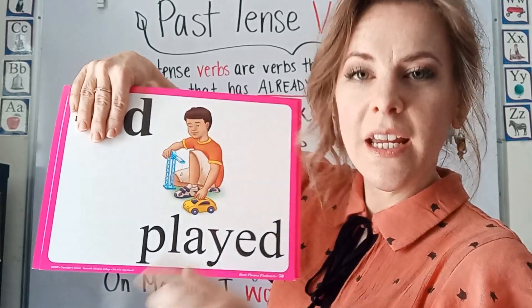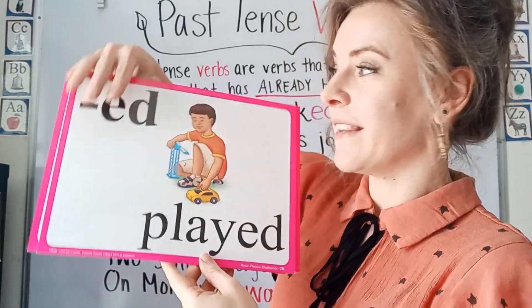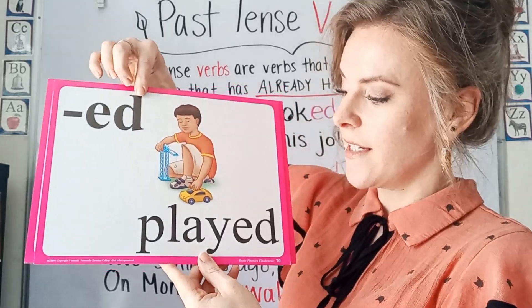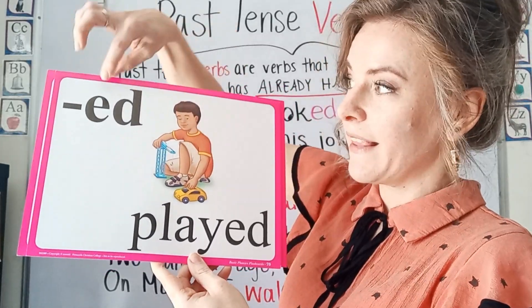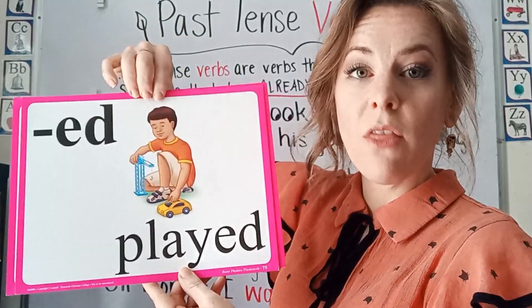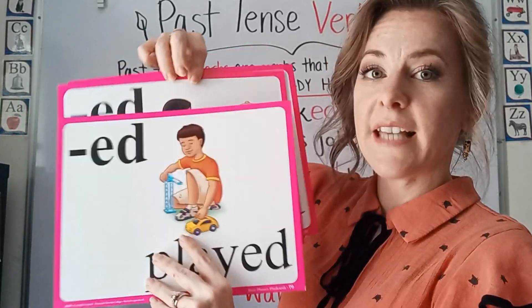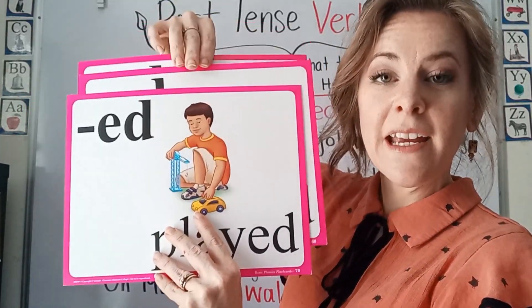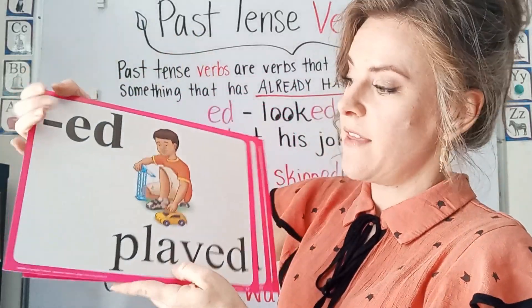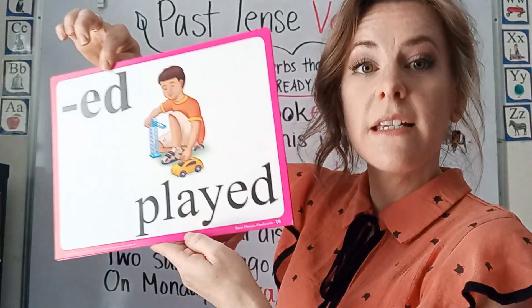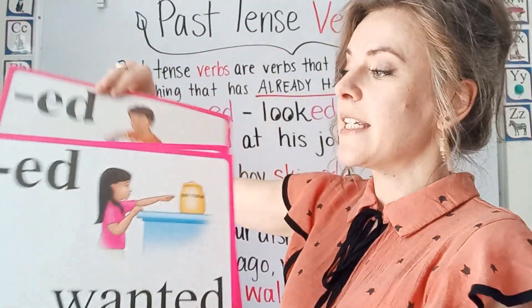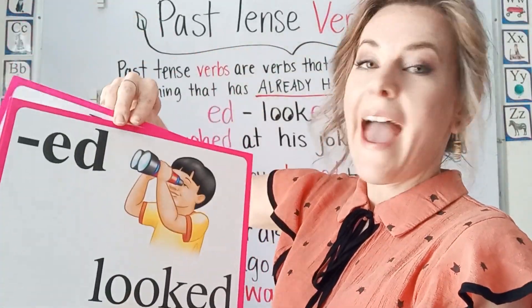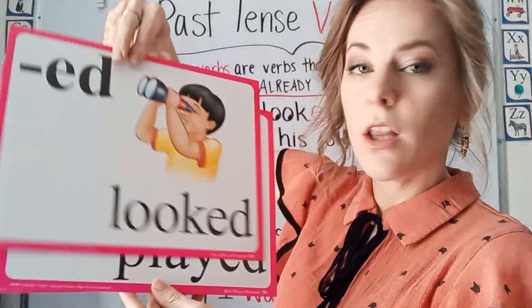And the third sound is D in 'played.' The E doesn't make a sound, but the D is the only sound you hear. You still spell them all three the same — E-D, E-D, E-D — but they have different sounds. This one is the D sound in 'played.' But today we are going to look at the T in 'looked.'